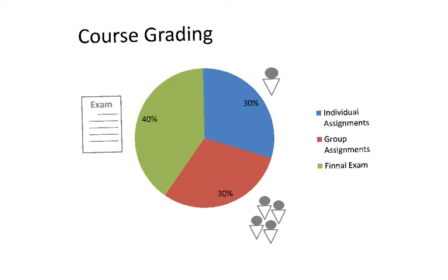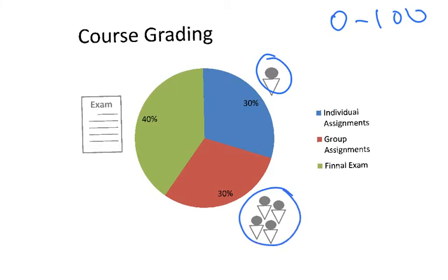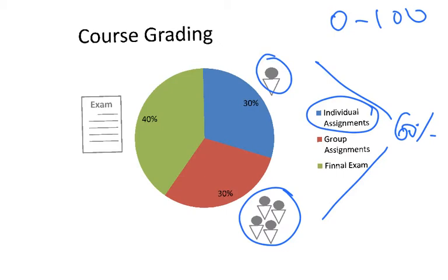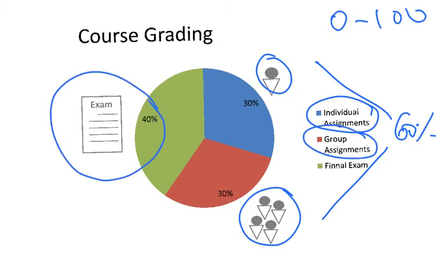An important thing I'm sure for all of you is how do you pass the course. Basically, the course is graded from zero to 100 — that will be the evaluation for every assignment and every exam. I try to have a continuous evaluation, meaning all the assignments done individually and in groups count for more than half of your grade — in fact, 60%. We'll have 30% for individual assignments, 30% for group assignments, and 40% for the exam at the end of the term.